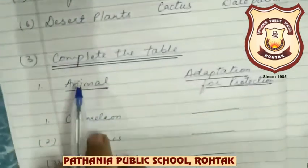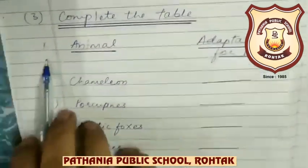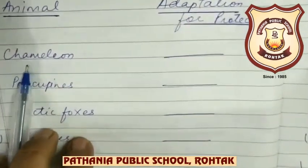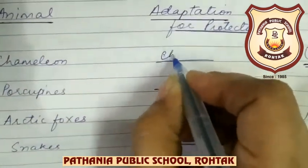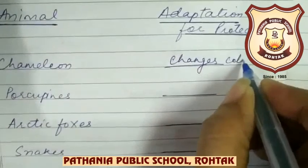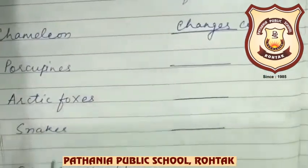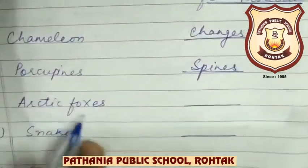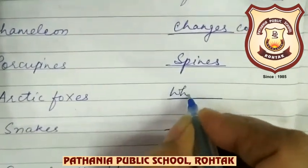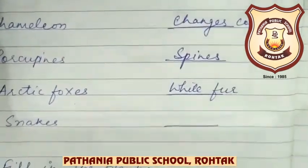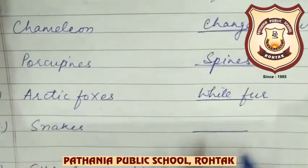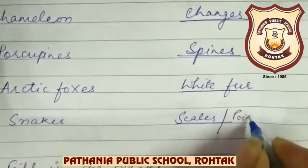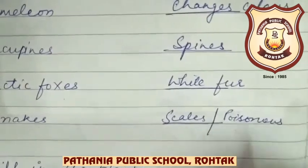Okay beta, now complete the table: animal and adaptation for protection. Chameleon — to protect itself from enemies it changes its color, or you can also write camouflage. Porcupines — they have spines. Arctic foxes — white fur. Snake — scales, or they have venom.